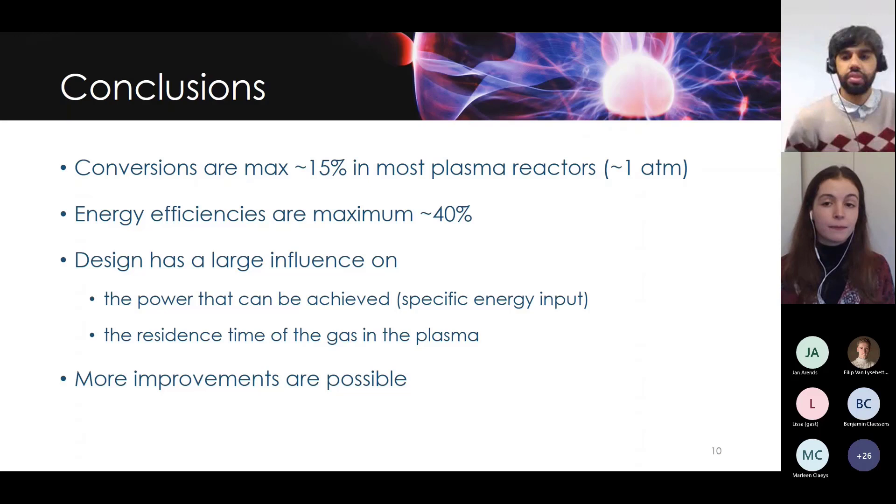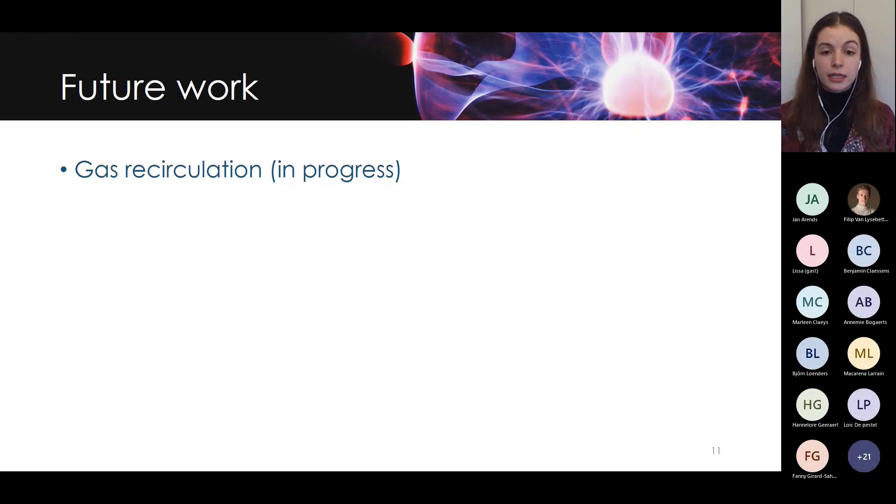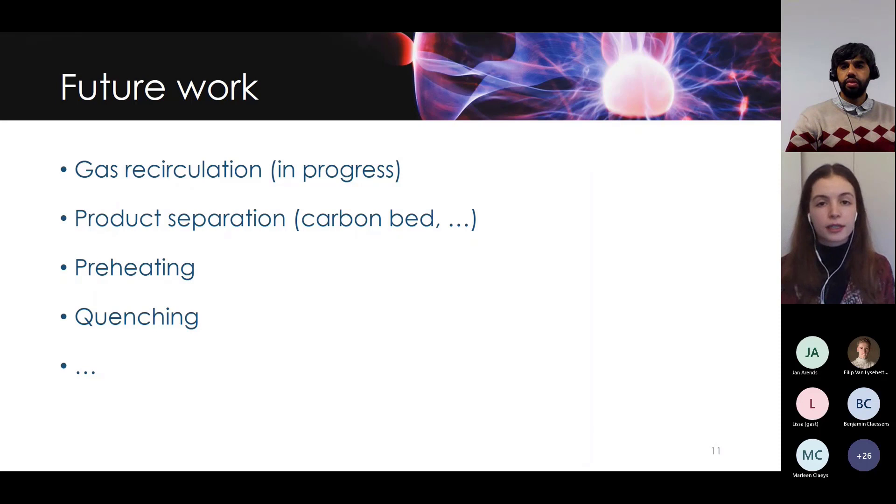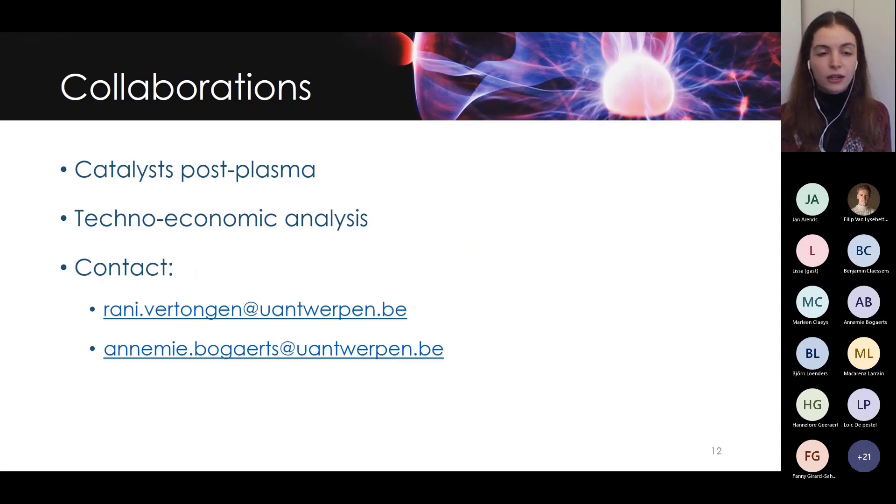So that's what we're working on right now. At the moment, I'm doing experiments with the concept of gas recirculation, which is well known in industry, but actually very investigated for plasma reactors. So this already gives some very promising results. This is still a work in progress. We're also looking into product separation, for example, by means of putting a carbon bed behind the plasma. We're looking at preheating the gas before we send it to the reactor or quenching, so quickly cooling the gas after it comes out of the reactor. All this and more actually, is what we're investigating at the moment. But we also believe that we can get even more out of these technologies if we can find some collaborations within the capture network, for example.